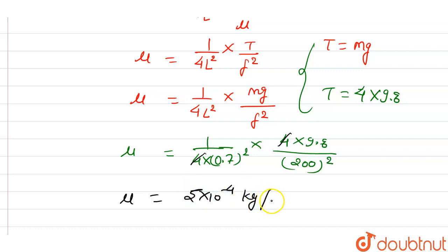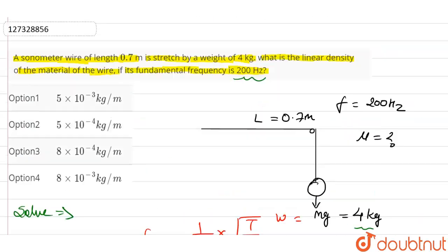In the meter, we will find the value of linear mass density, because the unit is kg per meter. The value of linear mass density is 5 times 10 to the power minus 4 kg per meter. Now let's see which option is present. 5 times 10 to the power minus 4 kg per meter, option 1 wrong, option 2 is the correct answer for this question. Thank you.